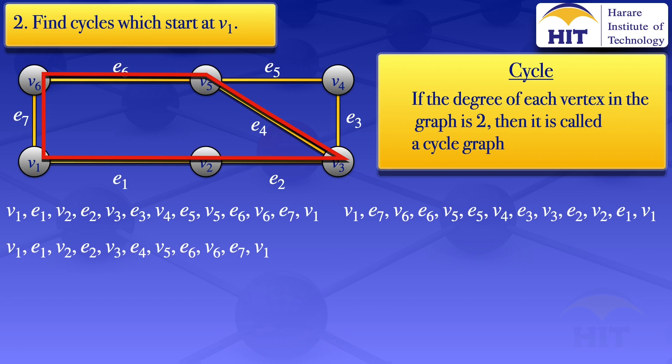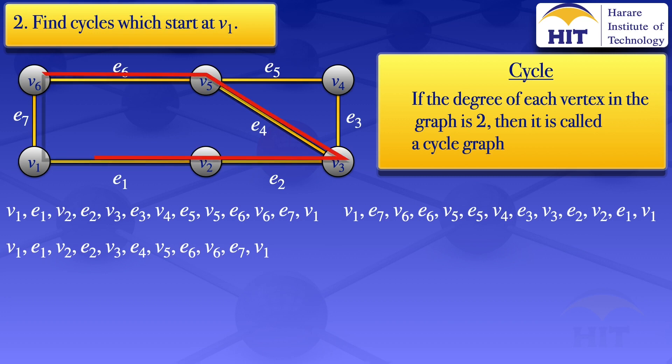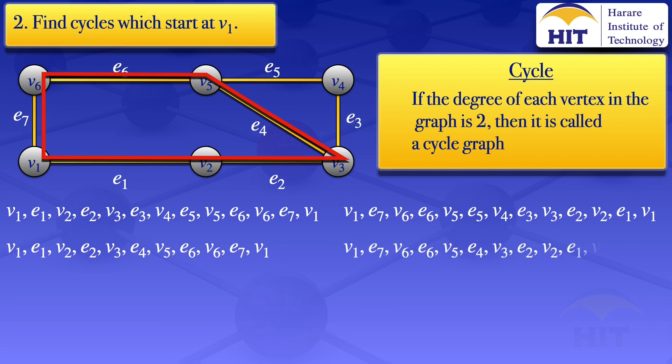We can also look at the clockwise direction: starting at v1, going to v6, v5, v3, v2, then back to v1. For that cycle: v1, e7, v6, e6, v5, e4, v3, e2, v2, e1, v1.